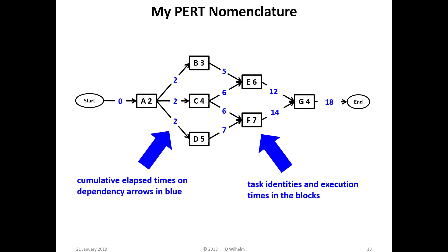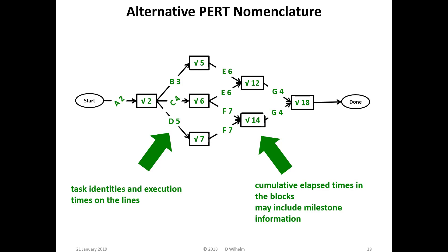There is at least one alternative nomenclature for PERT diagrams. My nomenclature uses the blocks for task identities and execution times and the arrows for the cumulative elapsed times as shown here. An alternative PERT nomenclature is to show milestones and elapsed times in the blocks and the task identities and execution times on the arrows.